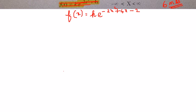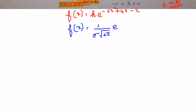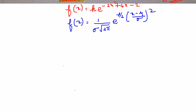As always, before you start doing the sum, first write the formula. The probability distribution function for a normal distribution is going to be 1/(σ√(2π)) · e^(−½·((x−ν)/σ)²). Once you have memorized this formula, please proceed with the sum.